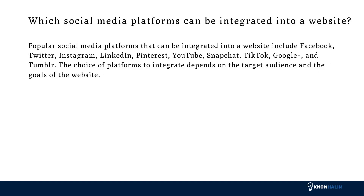Which social media platforms can be integrated into a website? Popular social media platforms that can be integrated include Facebook, Twitter, Instagram, LinkedIn, Pinterest, YouTube, Snapchat, TikTok, Google+, and Tumblr. The choice of platforms to integrate depends on the target audience and the goals of the website.